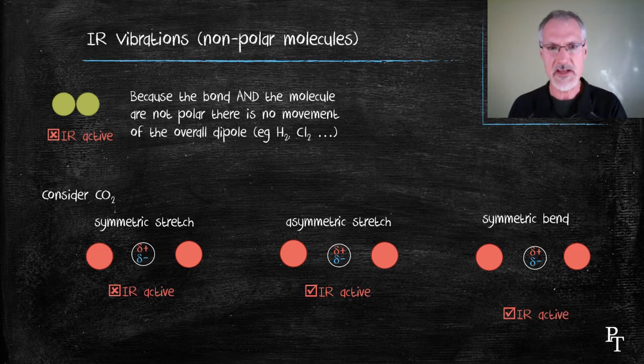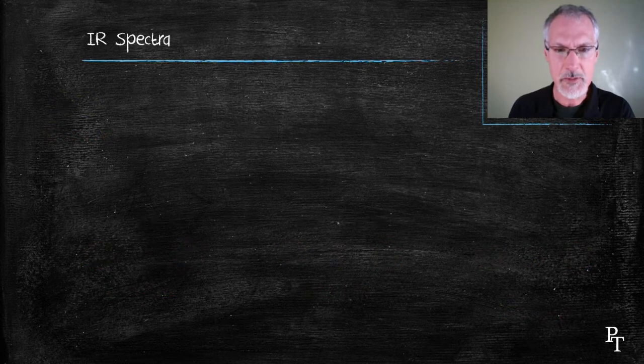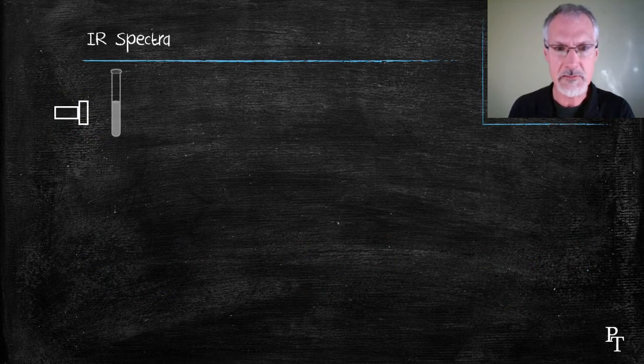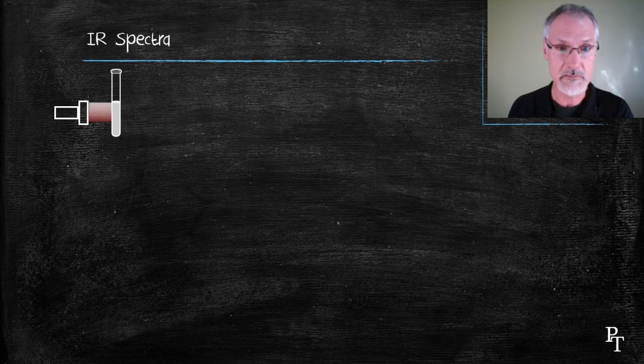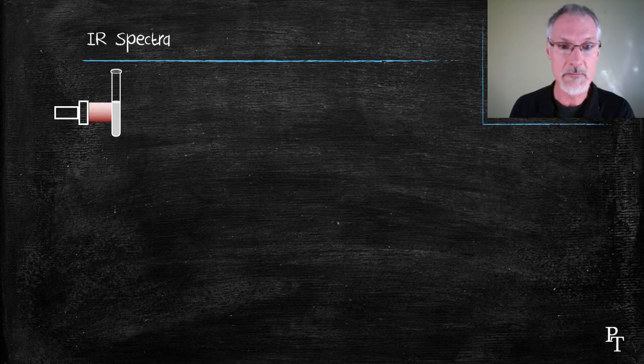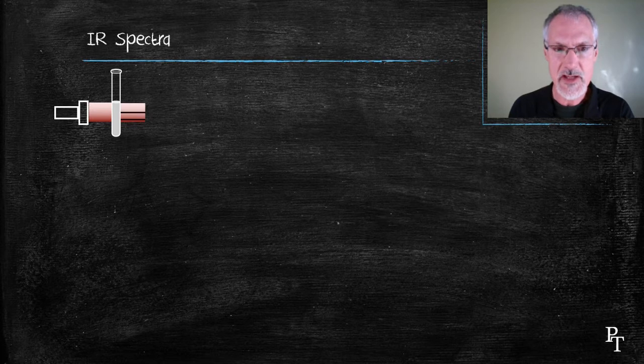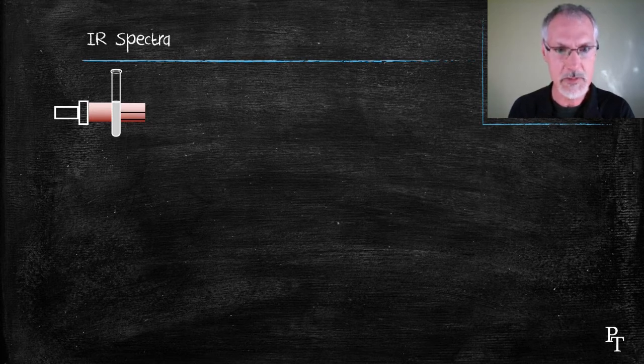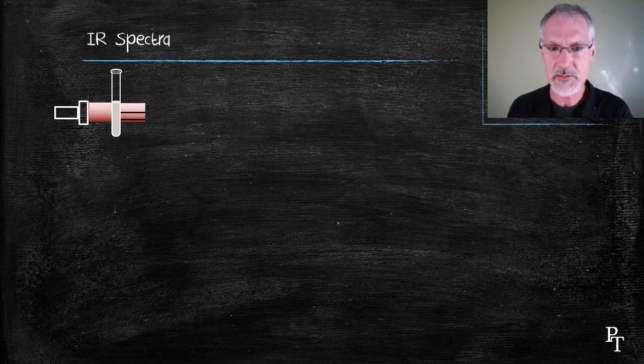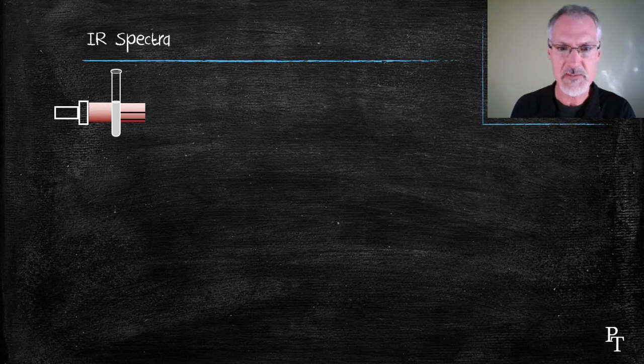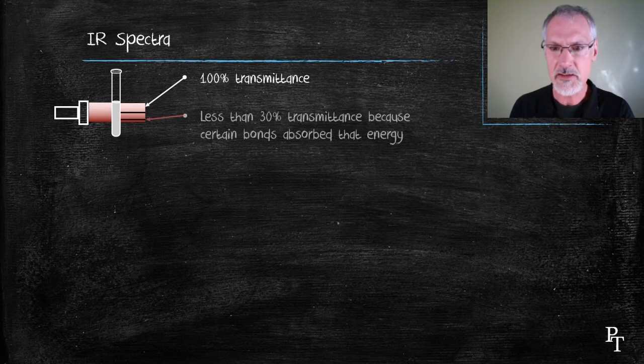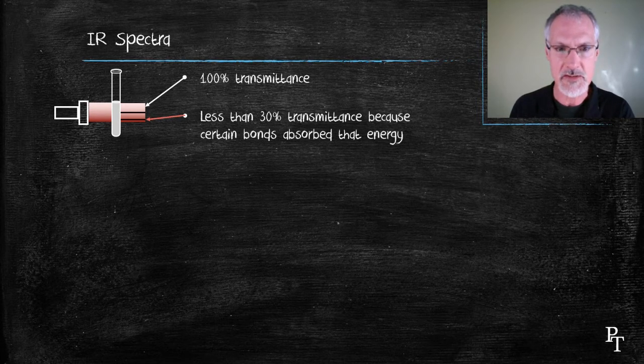Now let's look at how the test works. We begin with our sample and we illuminate it with infrared radiation, a wide range of infrared radiation going from wave numbers of 10,000 down to 100. As it shines through that sample, bonds in the sample will absorb certain wavelengths. And as a result, certain wavelengths or certain energies will be removed. So portions will pass through virtually unaffected and you'll also have portions that absorb radiation.